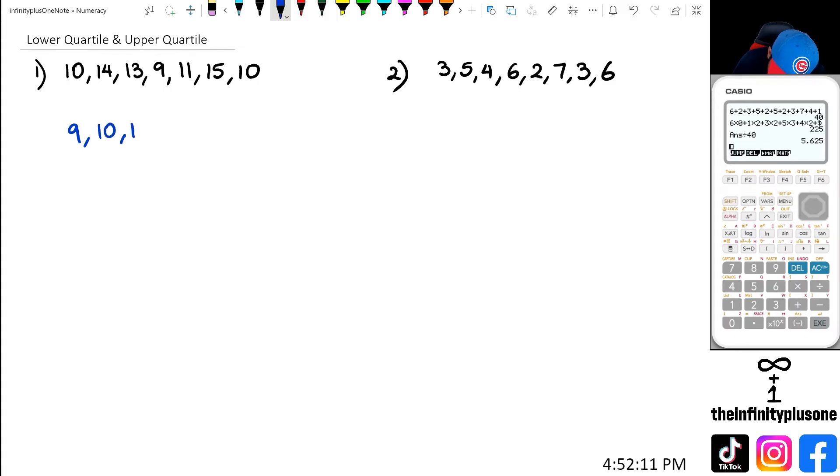So I've got 9, 10, 10, 11, 13, 14, and 15. Now here I have the median, which is going to be the 11. Because I know to find the median, I take the total number of numbers that I have, which is 7. 7 plus 1 divided by 2 gives me the fourth number. So when I put it in order, the fourth number is the median.